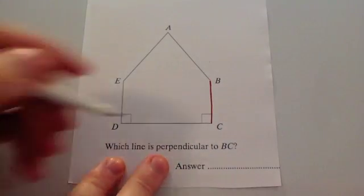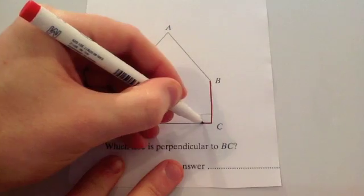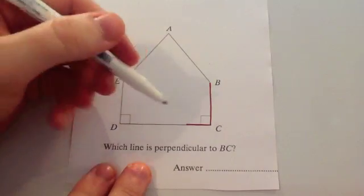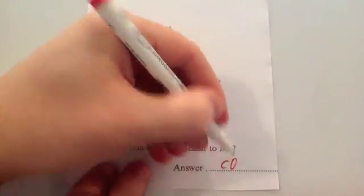In other words, which line is at 90 degrees? As you can see, the line CD here would be perpendicular to it, 90 degrees. Which line is perpendicular to BC? CD.